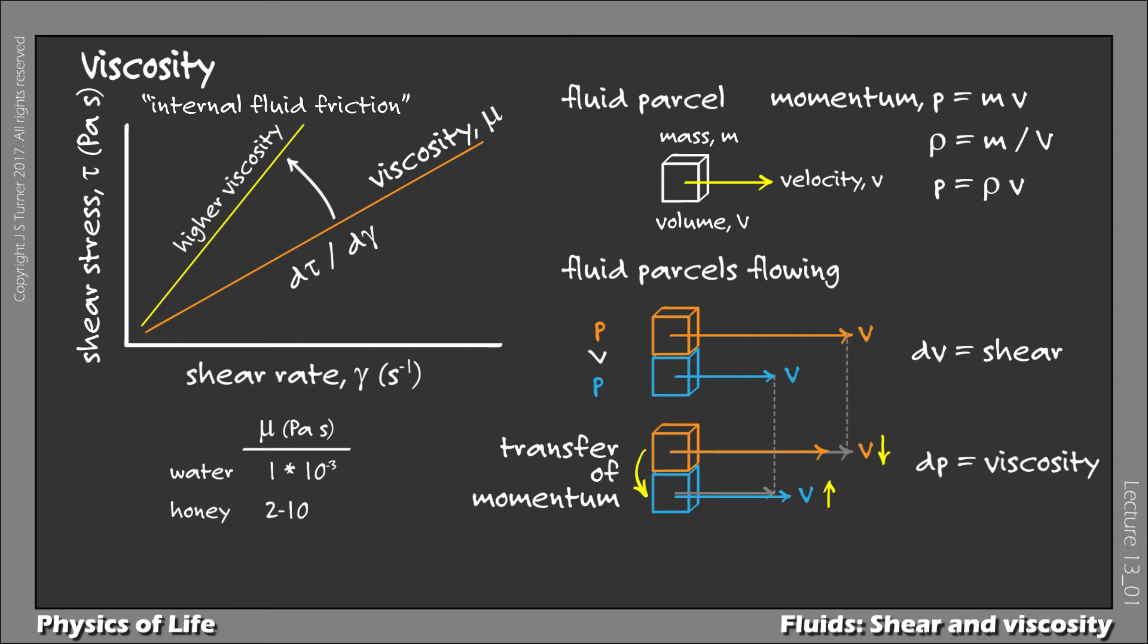Honey, for example, is a high viscosity fluid with viscosity of 2 to 10 Pascal seconds, roughly 3 to 4 orders of magnitude more viscous.